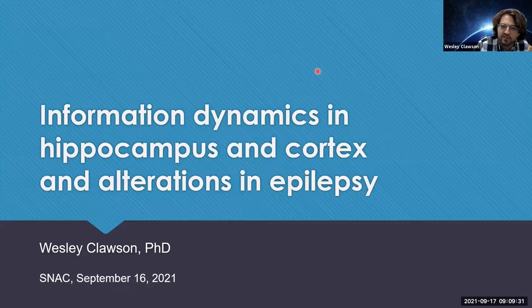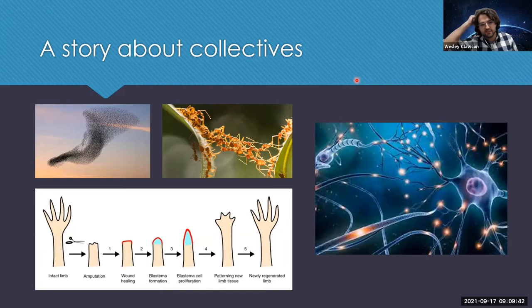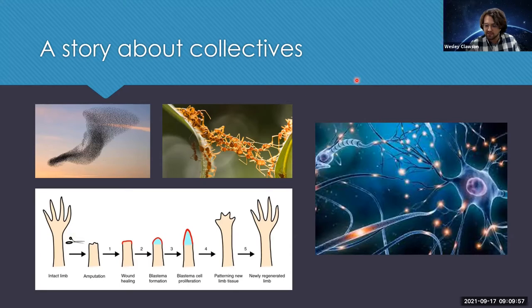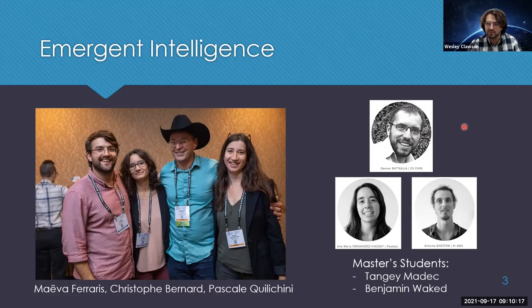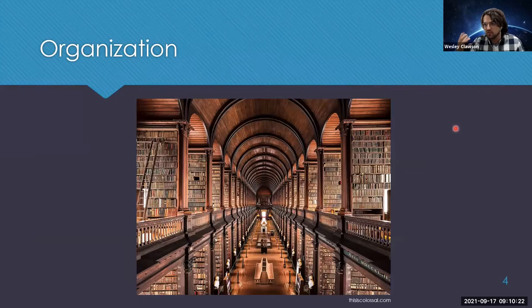I'm Wes, and this is my SNACKS talk: information dynamics in hippocampus and cortex and their alterations in epilepsy. But really it's a story about collectives — things like bird flocks, ant collectives, or cell collectives, and for this audience, neuroscience collectives of neurons. What's really interesting about collectives is that sometimes when they come together you get interesting emergent things like intelligence. Here's the group responsible for the work: myself, Maiva Ferraris, my supervisor Christophe Bernard, Pascal Quilichini, Demian Battaglia, Anna Fernandez, Anton Guestum, and two master's students, Tangi and Benjamin.